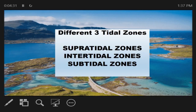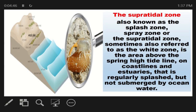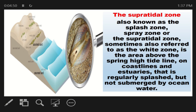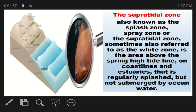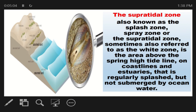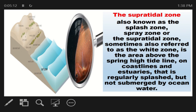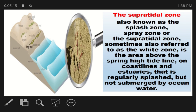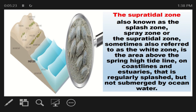According to ecologists, estuaries are divided into three different tidal zones: the Supra Tidal Zone, the Intertidal Zone, and the Subtidal Zone. The Supra Tidal Zone is also known as the Splash Zone, Spray Zone, or sometimes referred to as the White Zone or White Beach. It is the area above the spring tide line on coastlines and estuaries that is regularly splashed but not submerged by ocean water. In short, this is found on the shore.